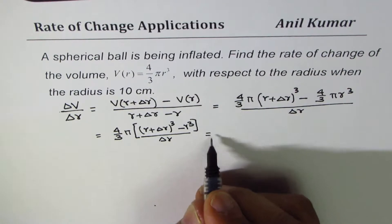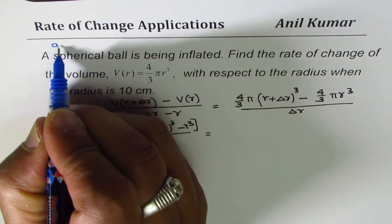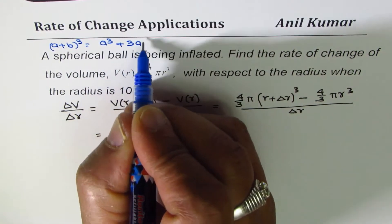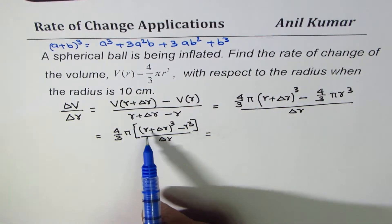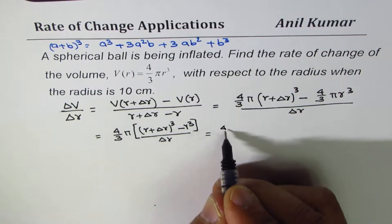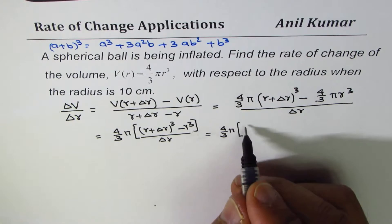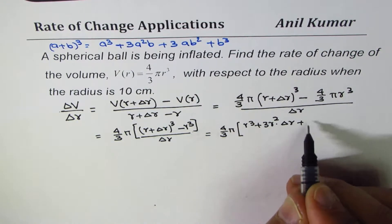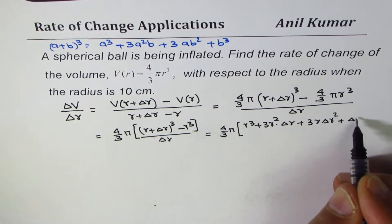Now we'll expand (R + ΔR)³. I hope you remember the expansion (a + b)³ is a³ + 3a²b + 3ab² + b³. Here a is R and b is ΔR, so we get 4/3 π and within the bracket R³ + 3R²ΔR + 3RΔR² + ΔR³ minus R³ divided by ΔR.